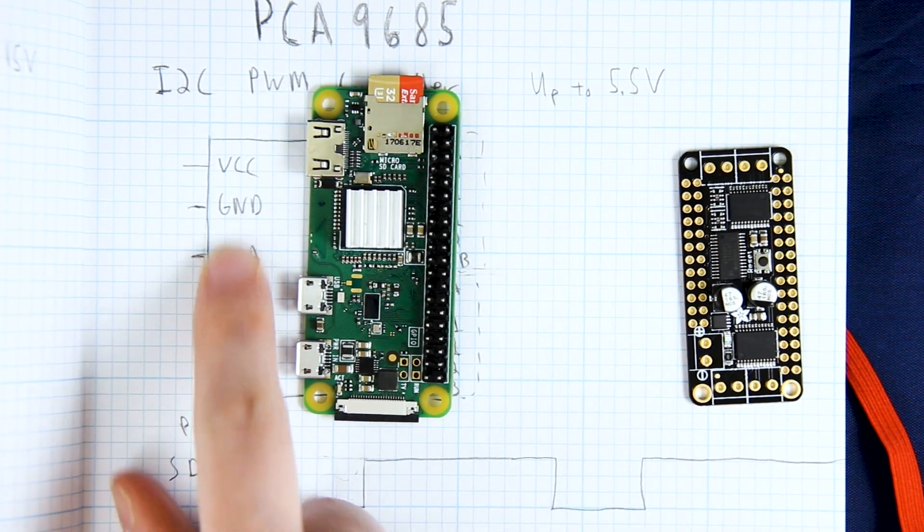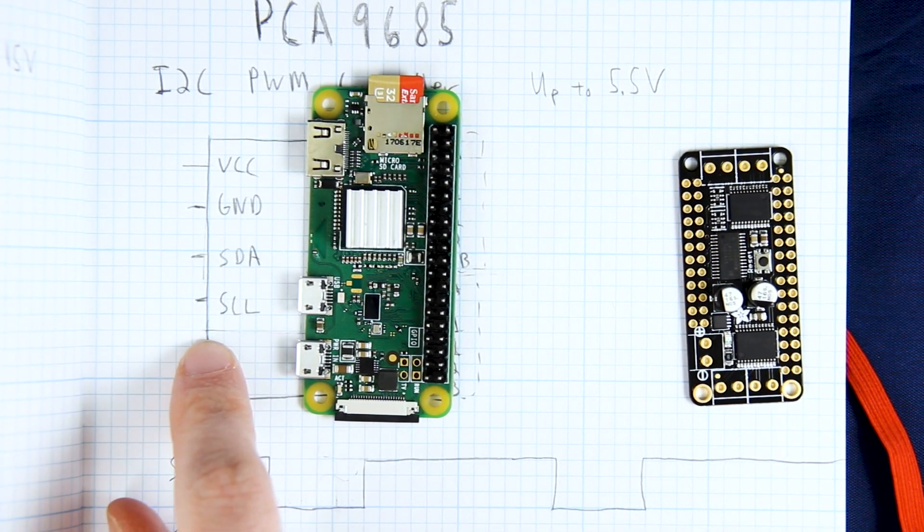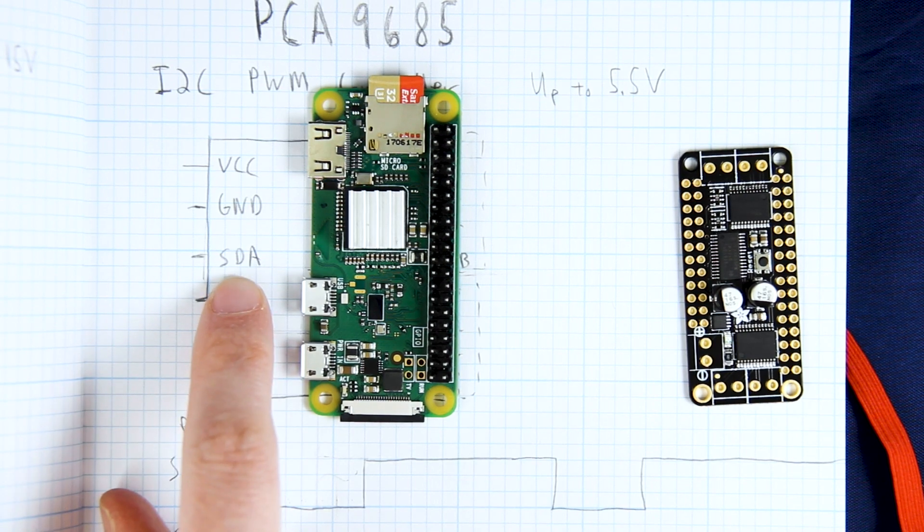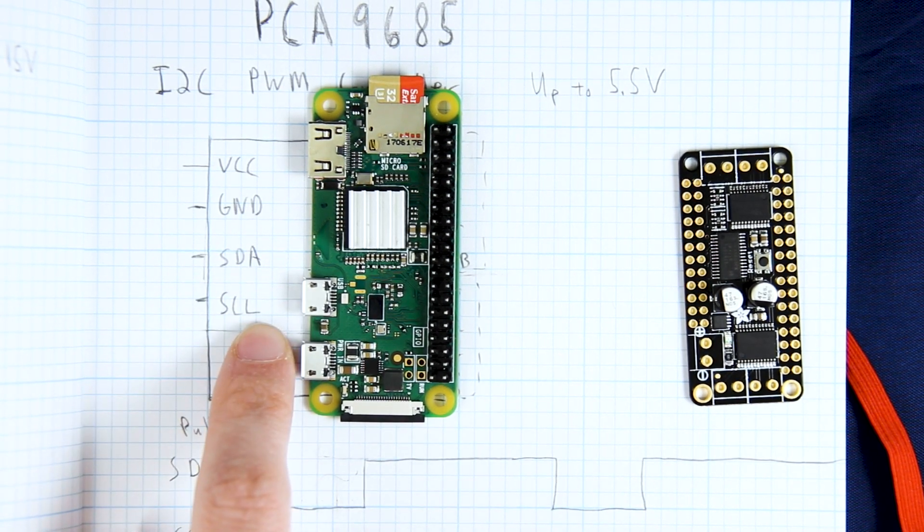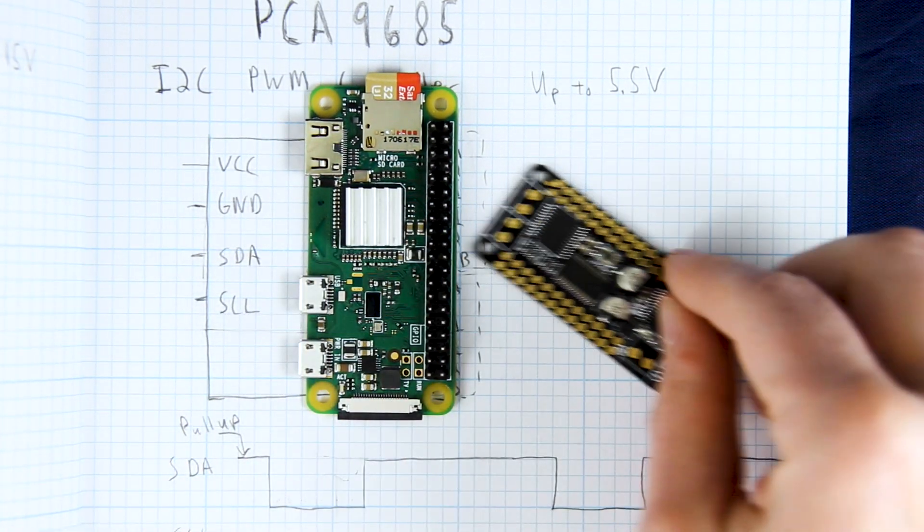The Raspberry Pi also has I squared C so we're going to be able to provide the 3.3 logic to the chips from the Pi and a ground and we're going to talk over I squared C which is an SDA which is a data line and our clock line right there. So that's going to be able to talk to this board.